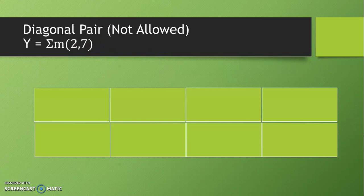Y is equal to summation of m(2, 7). So it is a SOP form of boolean function and we know that it is for 3 variables. So we have to prepare K-map with total 8 cells. We have AB on the horizontal plane and number given is 00 01 11 10.